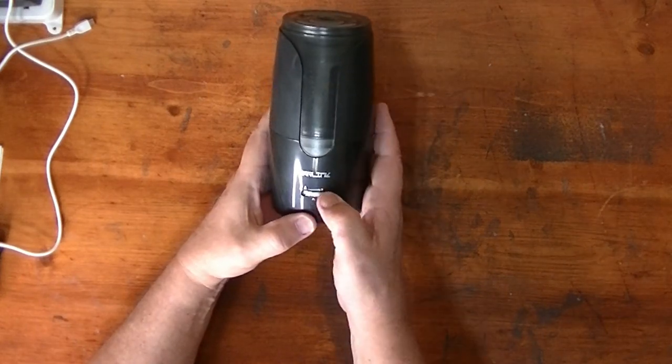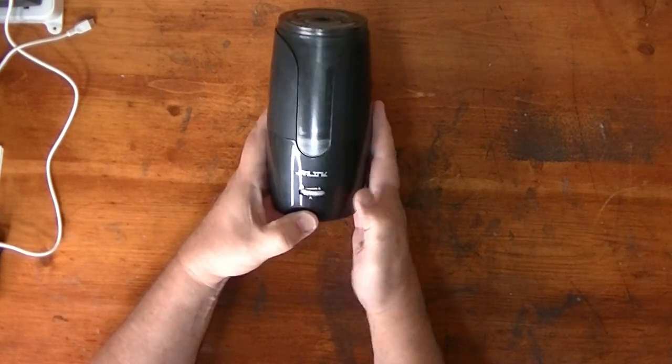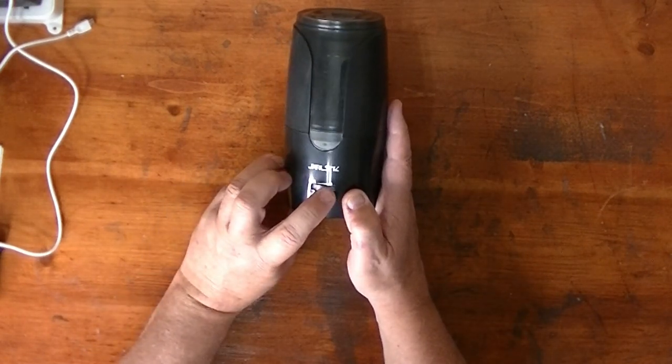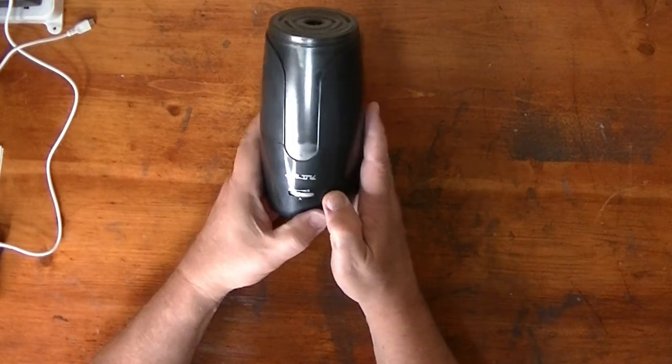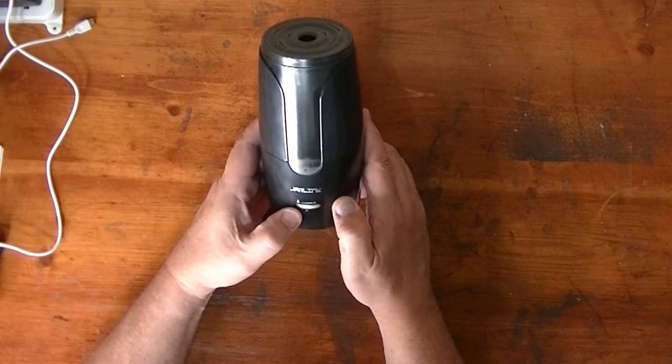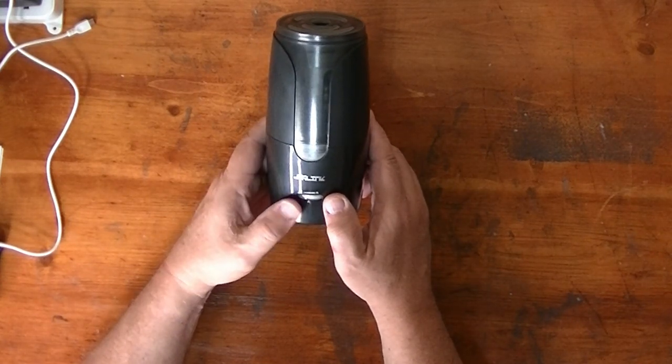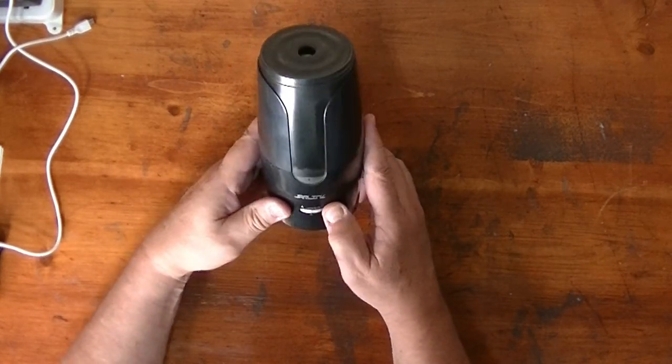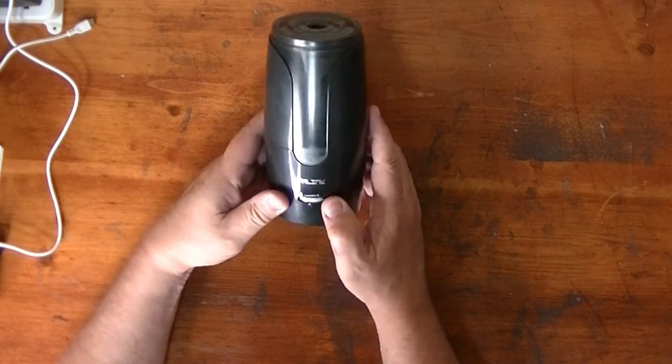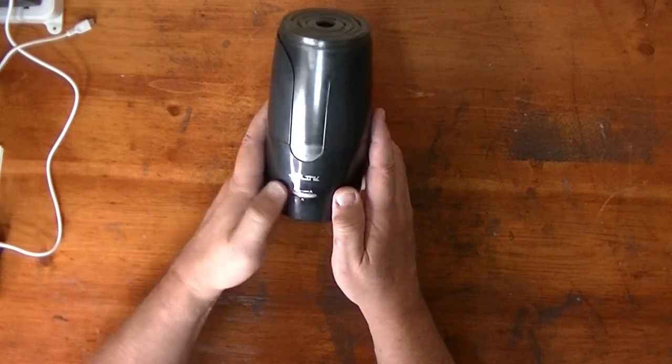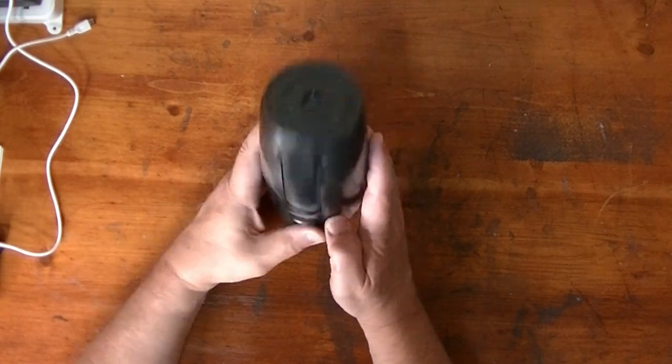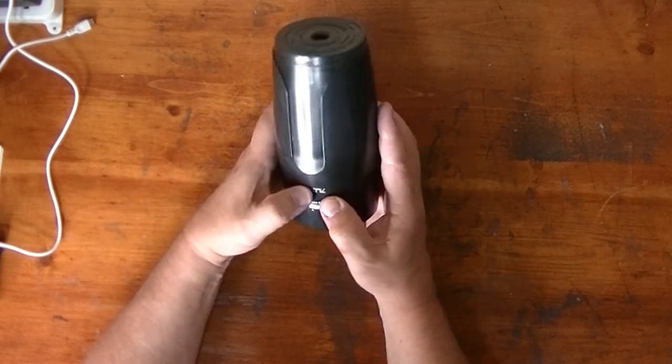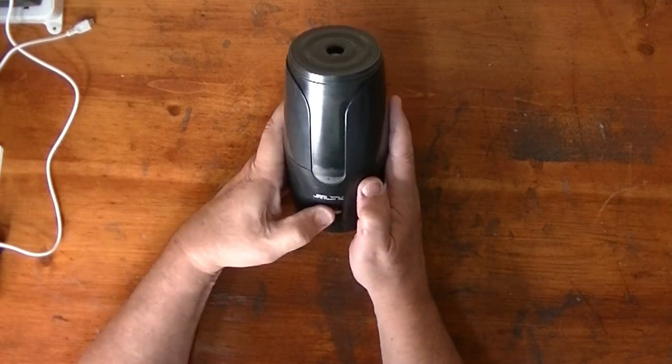Okay, this pencil sharpener has an adjustment here that you can go one, two, three, and it's supposed to give you either a very sharp point or kind of blunt the end of it a little bit. However, in my testing, they both came out pretty close to the same kind of sharpness, even under a magnifying glass. I was unable to get this to make a blunt. And so I would say that this adjustment here is useless, to be honest. So fortunately for me, I like the sharp point. So I don't care about the blunt part here. That doesn't make a difference for me.